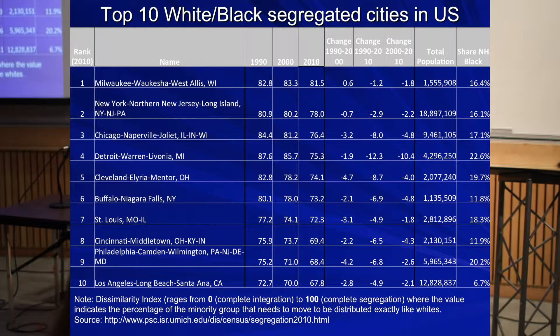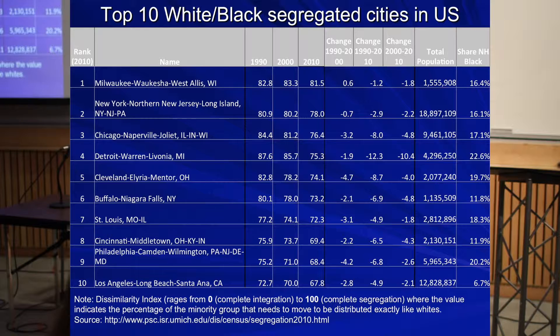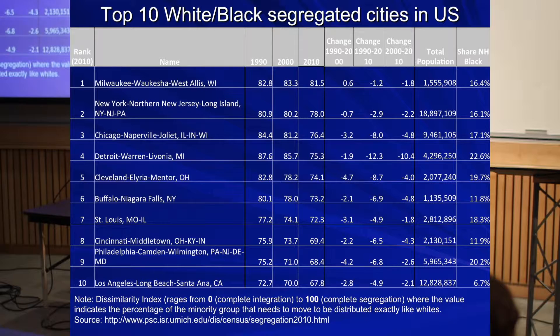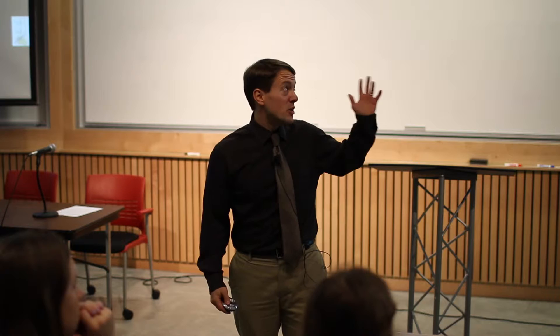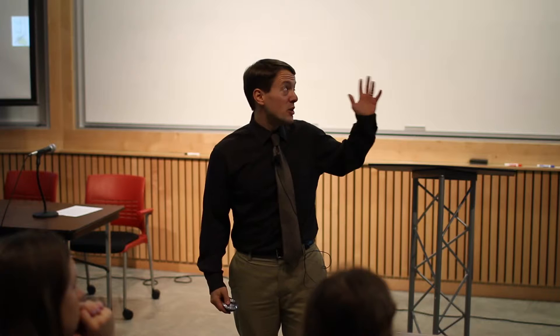Here's the list of the top ten most white-black segregated cities in the United States. One thing to note: you don't get to a southern or western city until number ten. This is actually a more northern phenomenon. Milwaukee is number one. On a map of Milwaukee, the green dots are blacks, blue are whites, red are Asian, orange are Hispanic — and you can see pretty big differences in where people live. This has been going on for about 100 years.